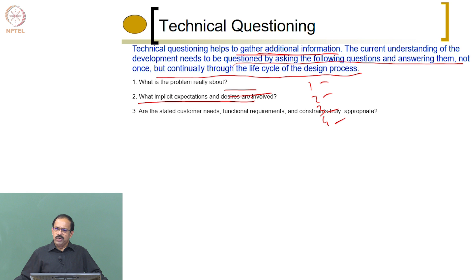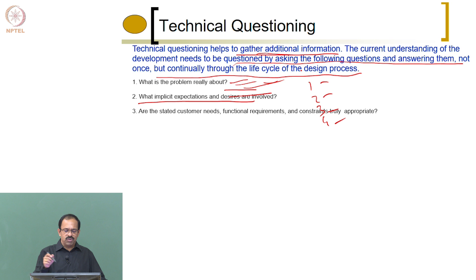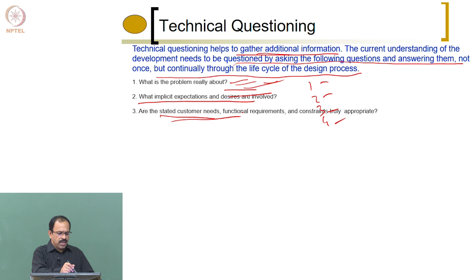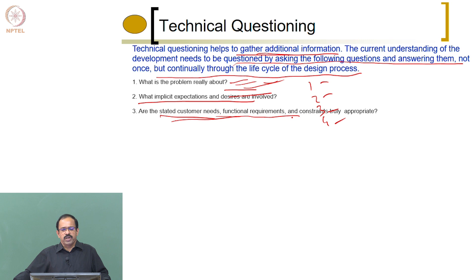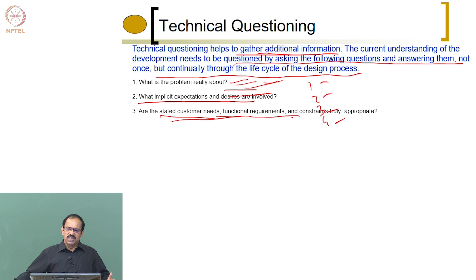The third question is: are the customer needs, functional requirements, and constraints truly appropriate? This comes from the first question. You answered many questions there. But then you should try to answer whether all these needs are really good — can they be achieved, and what are the constraints that may come up in developing this product? You do not have many customer needs at this stage, only very few. But are they appropriate? Is protecting from sun and rain a good need? Is it a constraint in development?